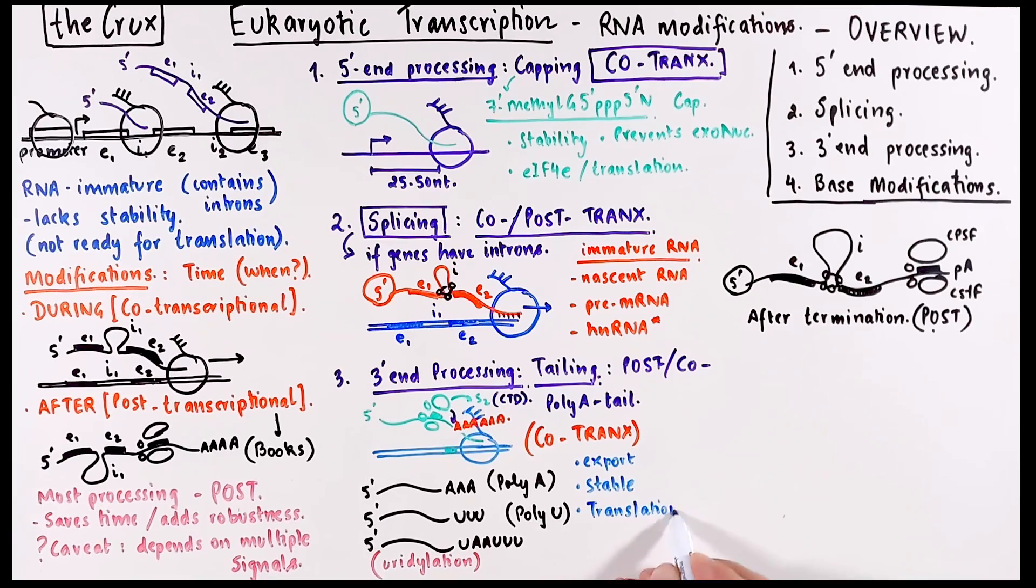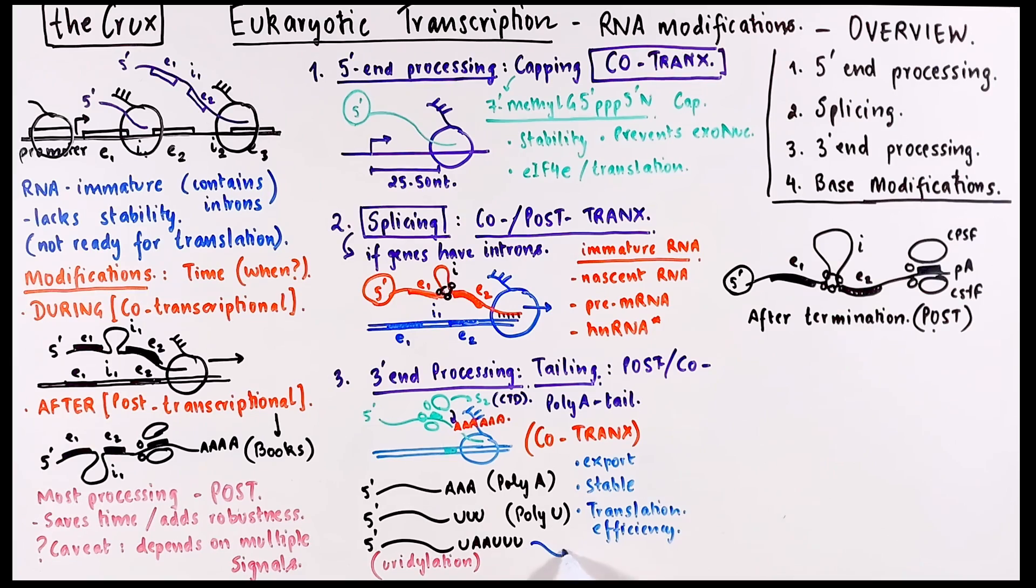And similar to 5' end capping, they improve the efficiency of the translation. But if you have U's in the 3' end of the tail, it usually impacts the decay and the turnover kinetics of the RNA.